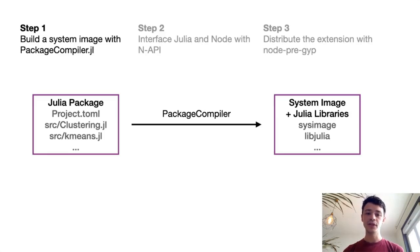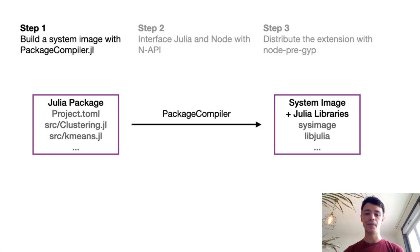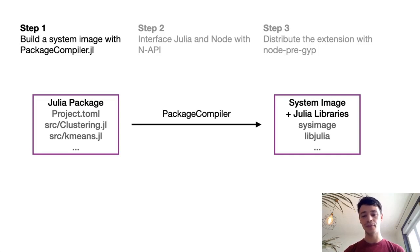The first step is to build a system image with PackageCompiler.jl. I'm not going to go into much detail because PackageCompiler is a well-known Julia package, but the main idea is that PackageCompiler takes your Julia source code and compiles it into a system image, including all the Julia libraries needed at runtime.